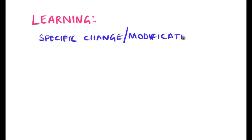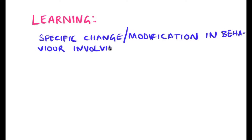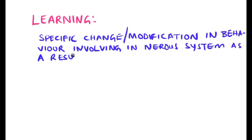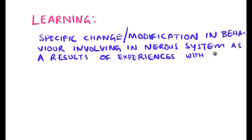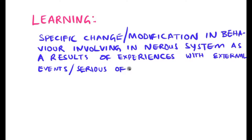Let us start with the definition of learning. Learning is the specific change or modification in behavior involving the nervous system as a result of experiences with the external events or series of events in one's individual life. This is the standard definition of learning as far as physiology is concerned.